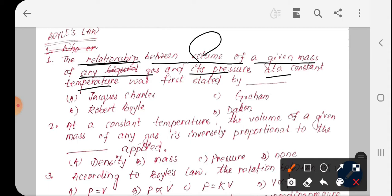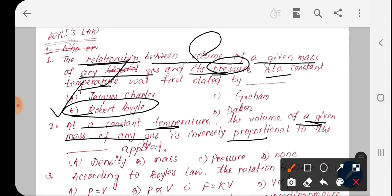Pressure, volume, temperature constant - this is Boyle's Law. At constant temperature, the volume of a given mass of any gas is inversely proportional to pressure. The volume is inversely proportional to the pressure. The Boyle's Law related question.